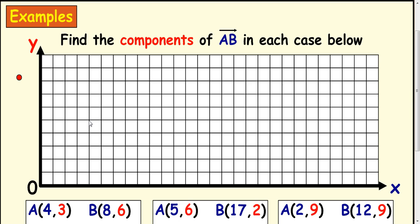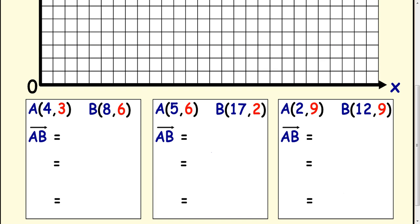So let's look at how that would work here. Find the components of AB in each case below. Well, we don't actually need the diagram here. We've given two coordinates and we already know that to get from A to B, we do B minus A where these are position vectors which are the same as the coordinates. So that's going to be (8,6) take away (4,3). So 8 take away 4 is 4, 6 take away 3 is 3. So that's your answer.